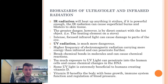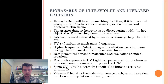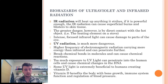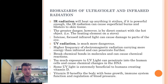Infrared radiation will heat anything it strikes. If powerful enough, IR radiation can cause superficial burns and blisters to skin tissue. The greater damage, however, is by direct contact with a hot object — even the heating element on an electric stove glowing red poses little danger unless you actually touch it. Intense, focused infrared light can also cause damage to parts of the eye such as the cornea and retina.